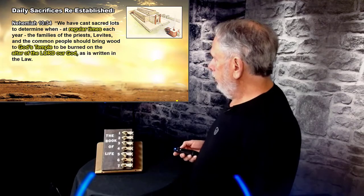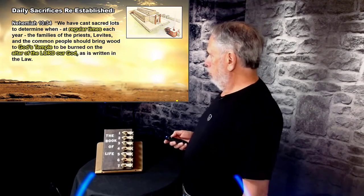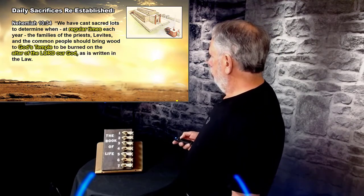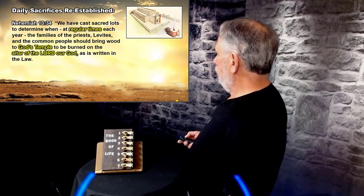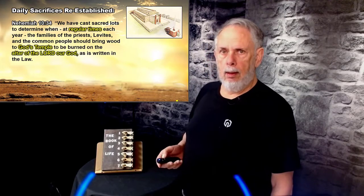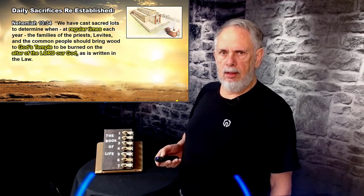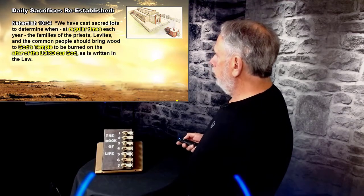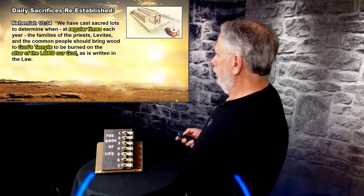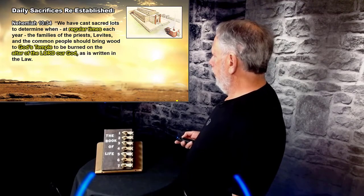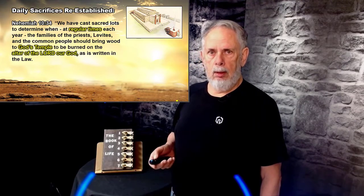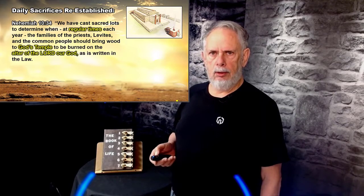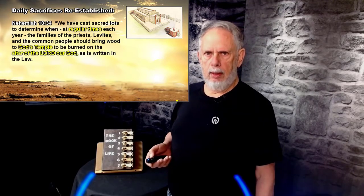The daily sacrifice was re-established in Nehemiah's time when the temple was rebuilt. We read: 'We have cast sacred lots to determine when at regular times each year the families of priests, the Levites, and the common people should bring wood to God's temple to be burned on the altar of the Lord our God, as written in the law.' All the way forward to Nehemiah's temple, God still had an altar where they would burn sacrifices.